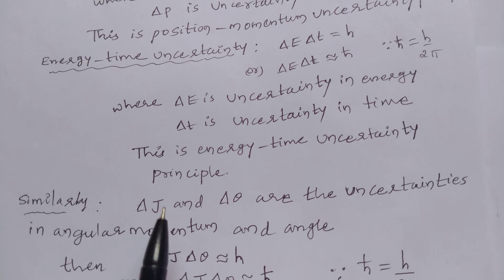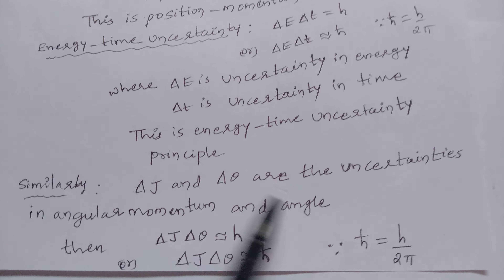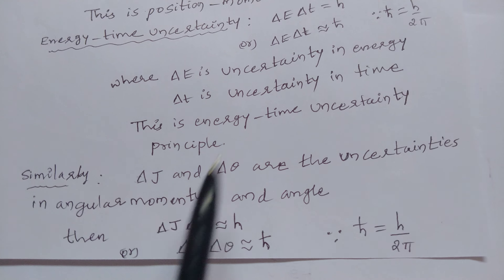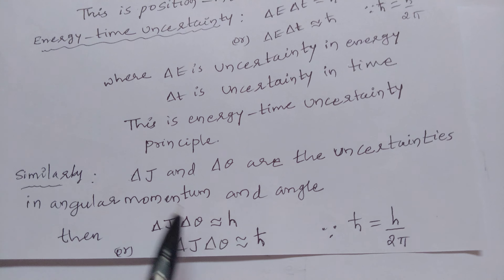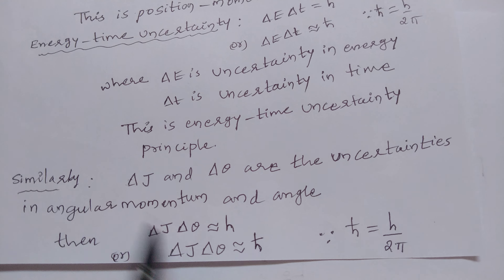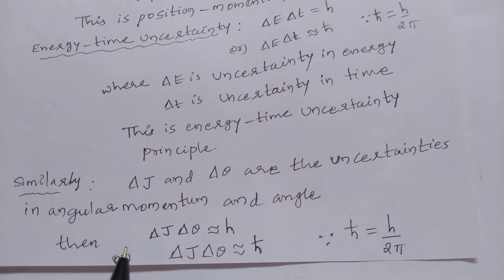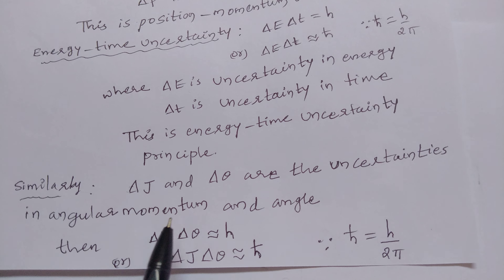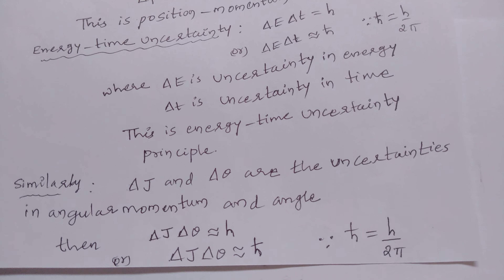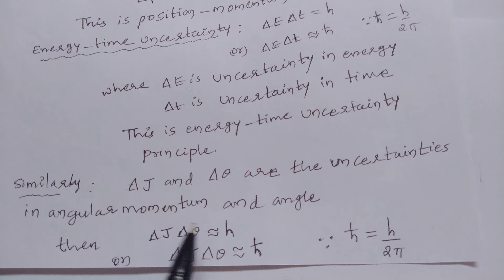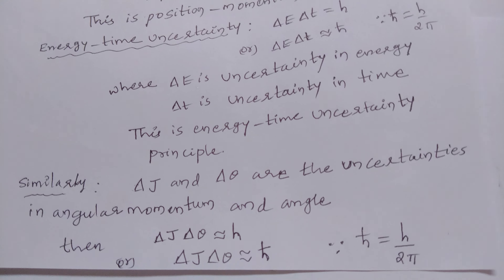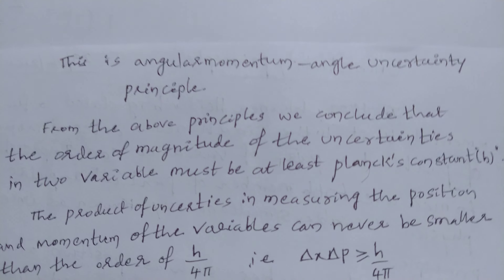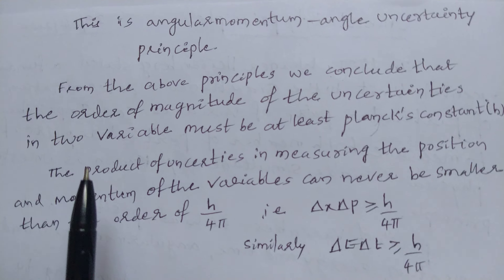Similarly, the uncertainty in angular momentum and uncertainty in angle — the product of these two, delta J into delta theta, is equal to h. The product of these two uncertainties gives a certain limit that must equal Planck's constant. This can also be written as delta J into delta theta equals h-cross, where h-cross is equal to h by 2 pi. This is the angular momentum and angle uncertainty principle.